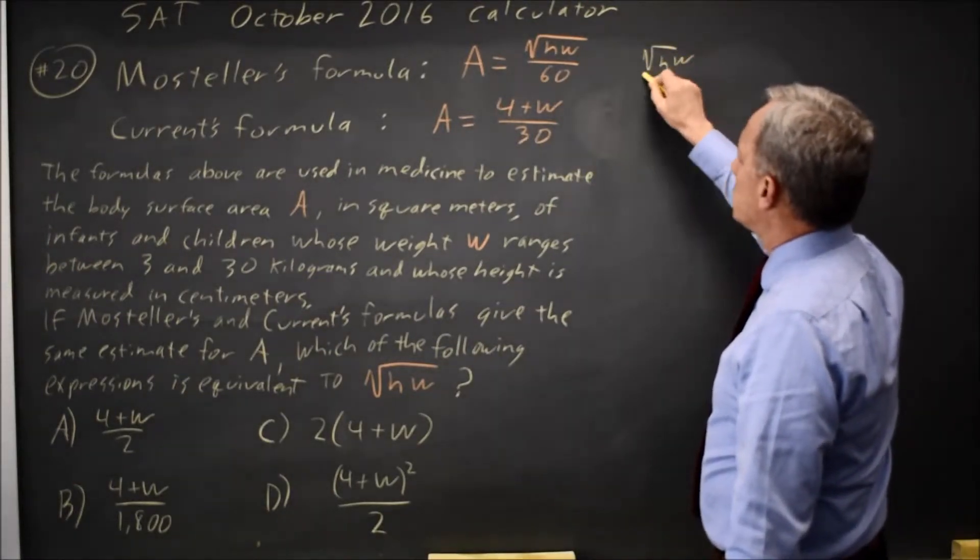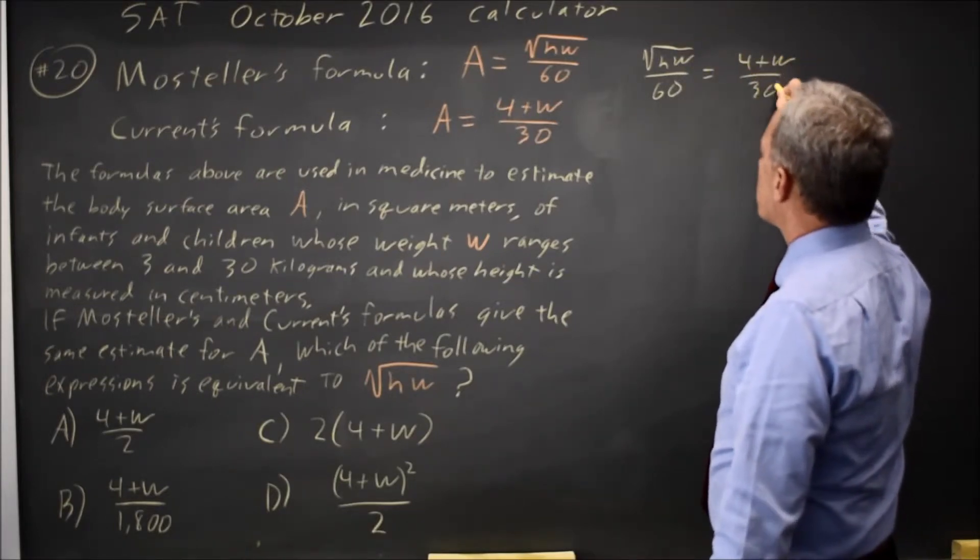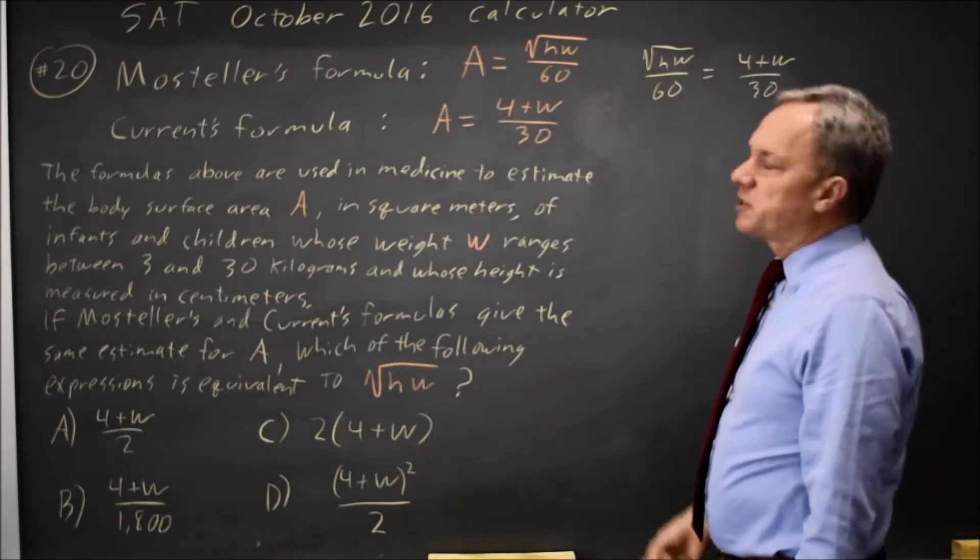So root HW over 60 equals 4 plus W over 30. And we want square root of HW by itself.